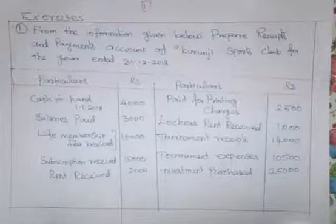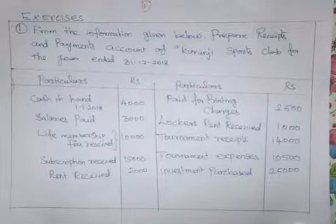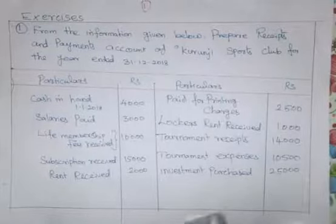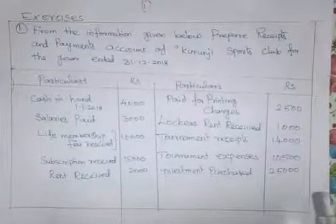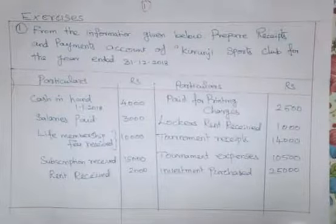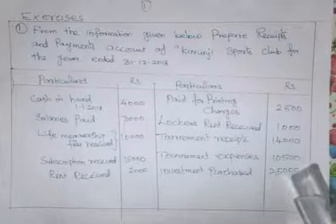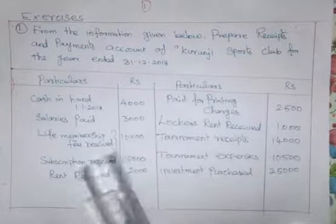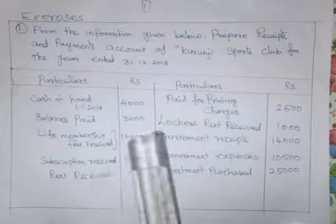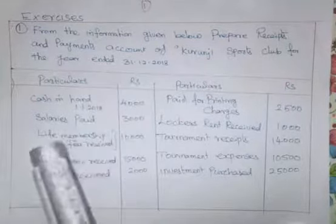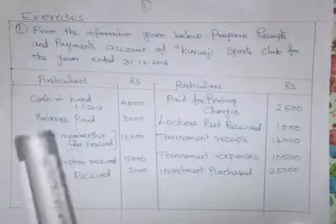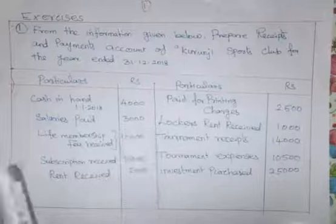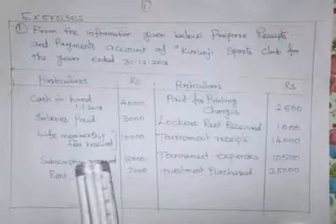Now, the problem: prepare Receipts and Payments Account. In Receipts and Payments Account, the debit side is all receipts and the payment side is the credit side. Receipts and Payments Account is related with opening cash balance and closing cash balance. Incomes and Expenses are related to Capital and Revenue Nature — Capital Receipts, Capital Expenditure, Revenue Receipts, Revenue Expenditure — and all are included in Receipts and Payments Account.